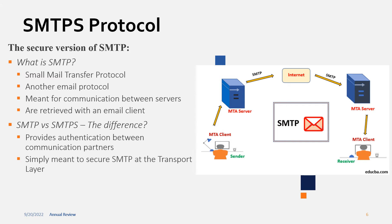Next we're going to learn about the secure version of SMTP, otherwise known as SMTPS. SMTP is the Simple Mail Transfer Protocol and it's another protocol focused on server-to-server communication. We can retrieve it with an email client, but this is primarily communication between two servers over the internet during the email process. The difference between the regular and the secure version is that it secures SMTP at the transport layer and also provides authentication between communication partners, requiring both users to be authenticated at the start and end of the transmission process.